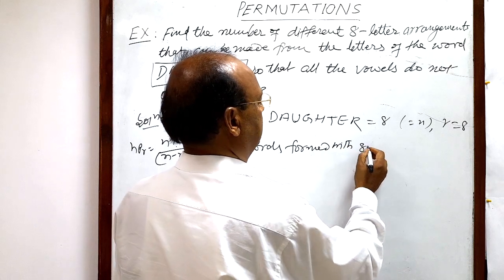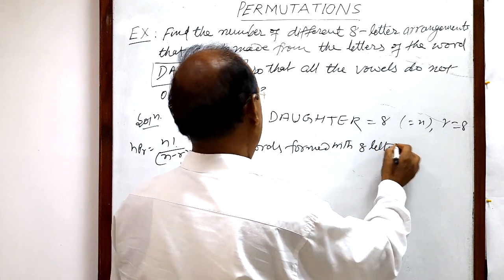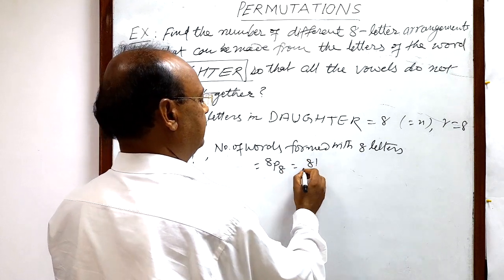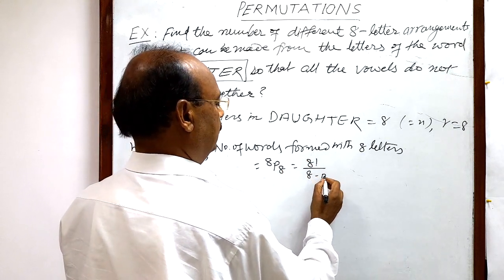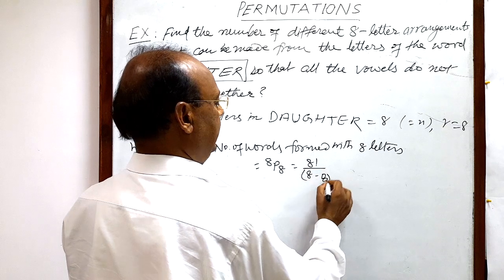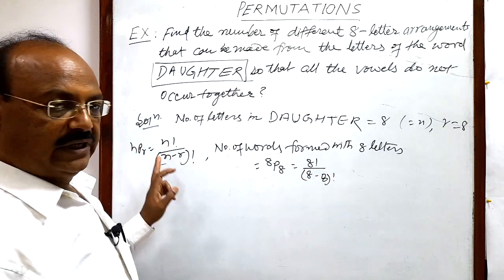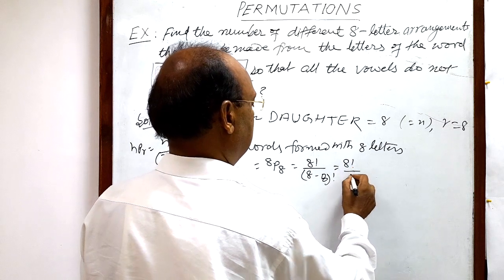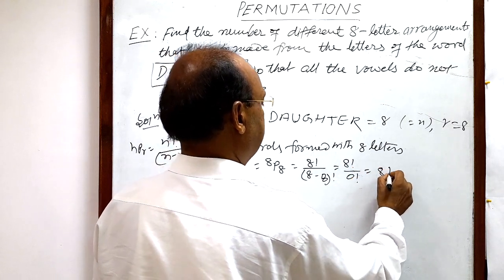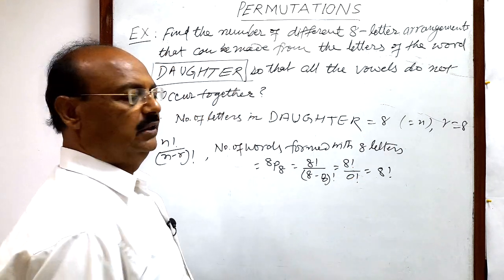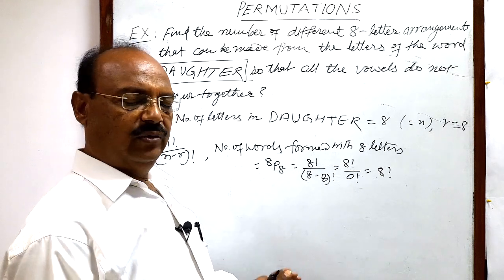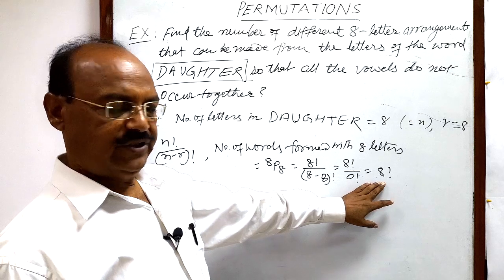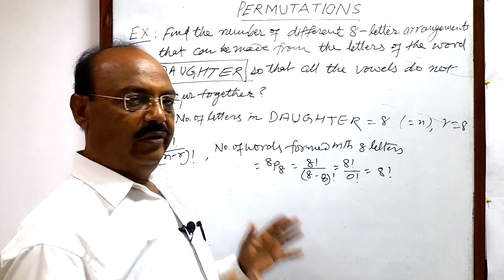With these 8 letters, the number of words formed will be 8P8, which equals 8 factorial divided by (8 minus 8) factorial, that is 8 factorial divided by 0 factorial, which is simply 8 factorial. So with no condition, the total number of words formed is 8 factorial.